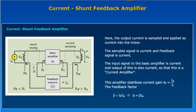Next, let's see the input and output resistances of your current shunt feedback amplifier. This block diagram shows the current shunt feedback amplifier. Here, the output current is sampled and applied as a current into the mixer. The sample signal is a current and the feedback signal is also a current. The input signal to the basic amplifier is a current and the output is also a current, so the basic amplifier used is a current amplifier. The current gain AI is defined as output current I0 by input current II, and feedback factor beta equals IF by I0.